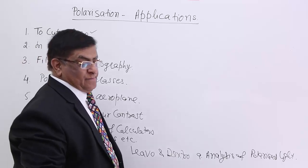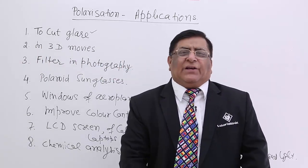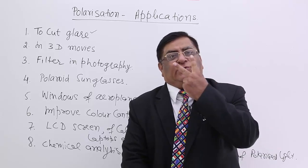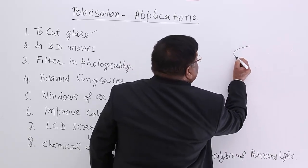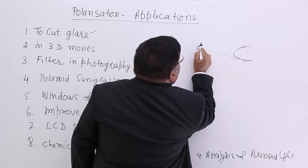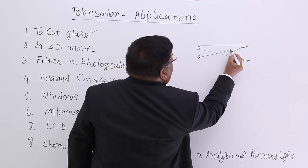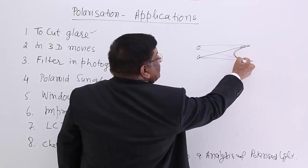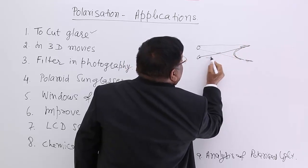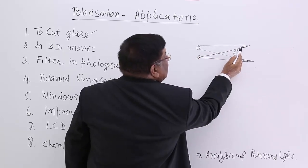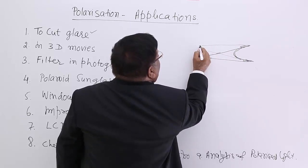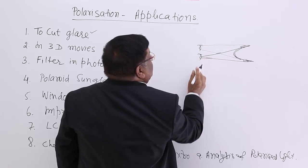The second application is in 3D movies - 3-dimensional movies. For 3D movies we have to replicate the method of seeing with 2 eyes. How do we see with 2 eyes? If I am seeing a face from 2 eyes, this eye looks this portion of the face and this eye looks that portion of the face - these portions are different. This eye can look at this ear, this eye cannot see that ear, and this eye cannot see this ear. So these are our 2 eyes.